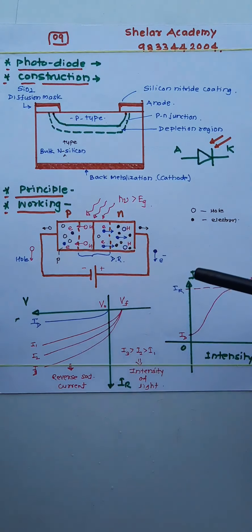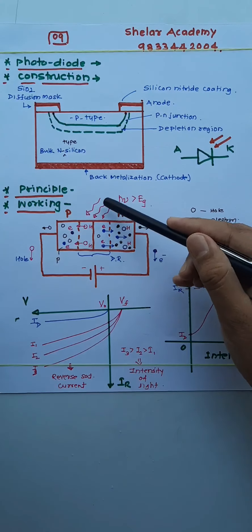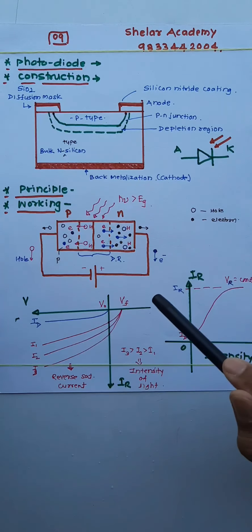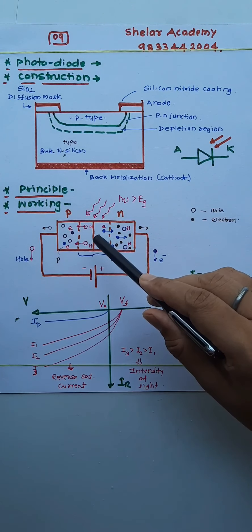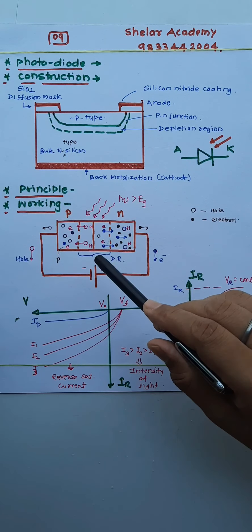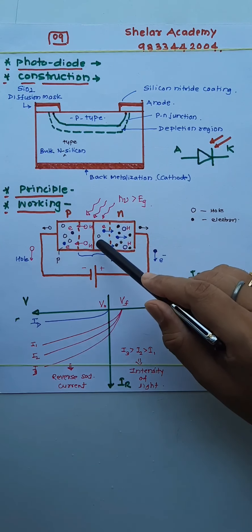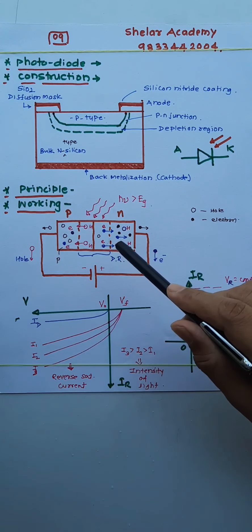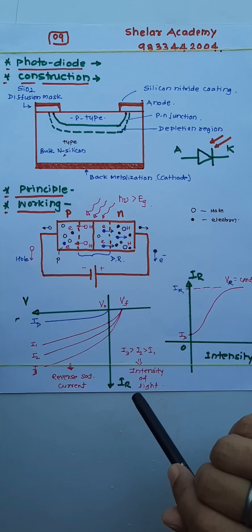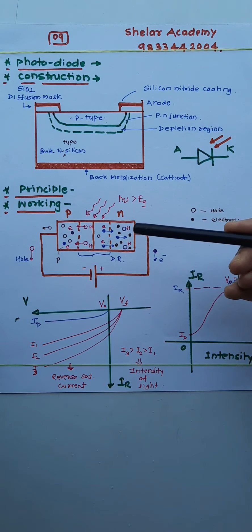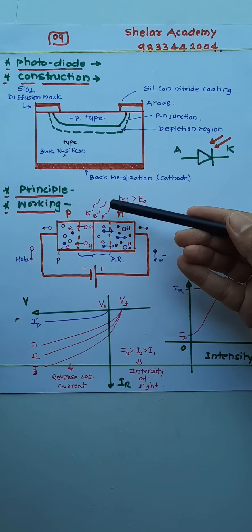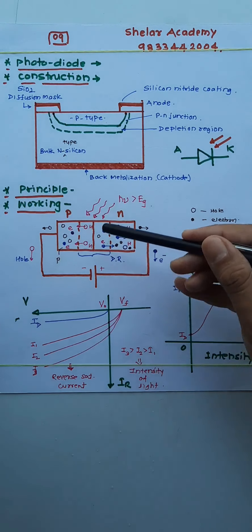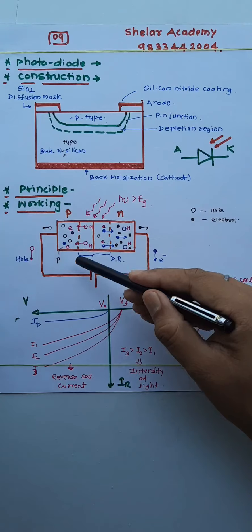When photons are incident on the depletion layer, they are absorbed by electrons present in the valence band. Those valence band electrons get excited and jump to the conduction band. As a result, free electrons become available in the conduction band and corresponding holes are available in the valence band — that is, electron-hole pairs are formed in the depletion layer.